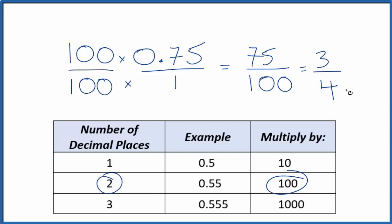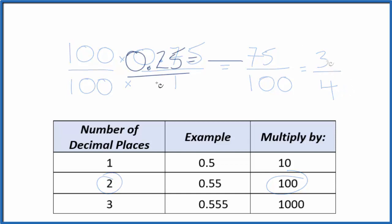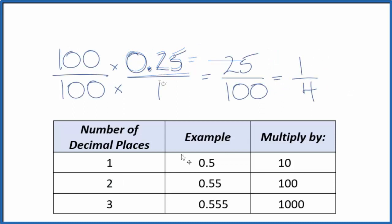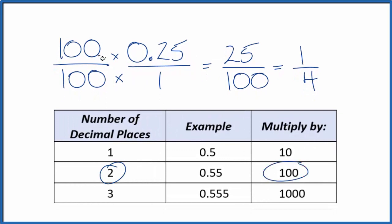Pause and try this one. 2 decimal places, we multiply by 100 over 100. We get 25 over 100, which we can simplify to 1 fourth. So the decimal 0.25 is equivalent to 1 fourth. 1 divided by 4, that's 0.25.